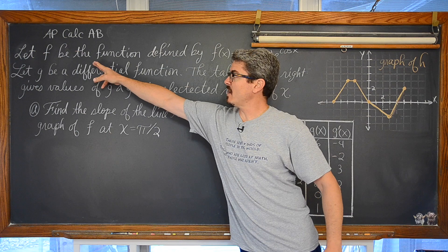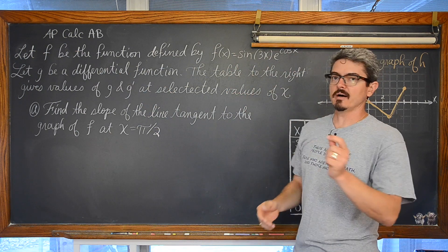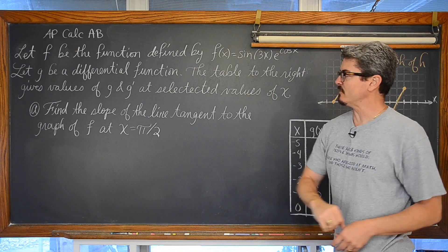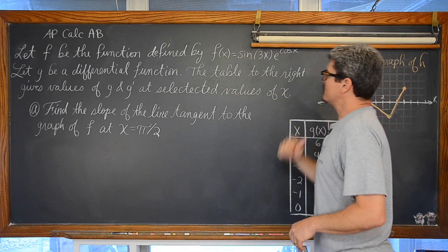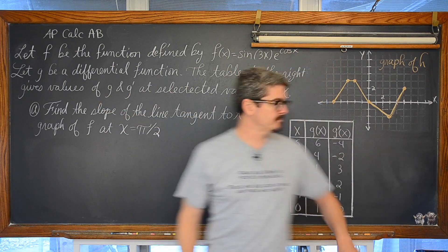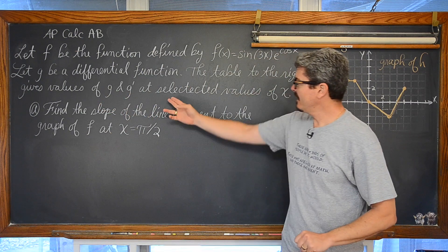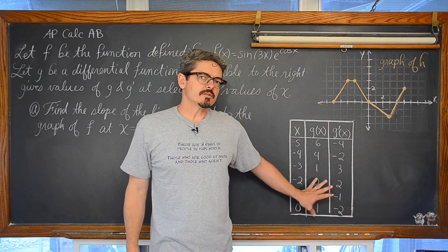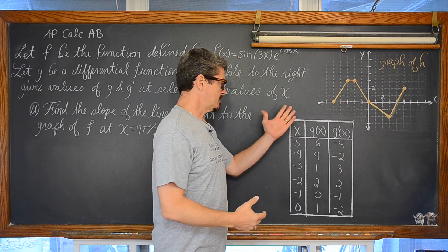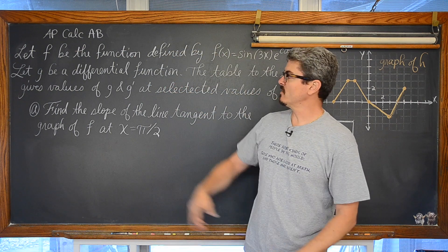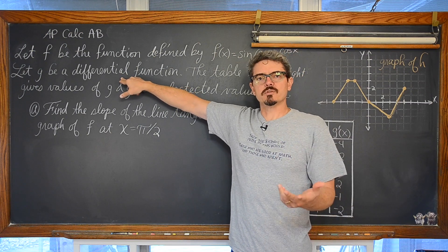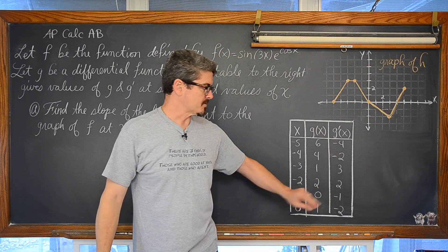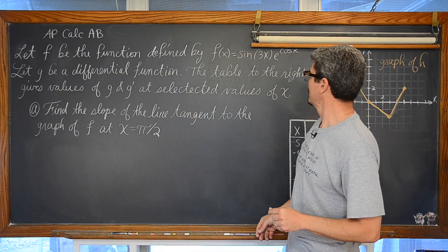In the original problem, let f be the function defined by f(x) = sin(3x) · e^(cos x). Let g be a differentiable function. The table gives the values of g and g prime at selected values of x. The fact that they are telling us g is differentiable means we know that g is also going to be continuous. This graph of h is going to be used in a later part.